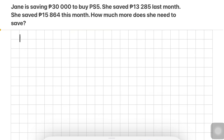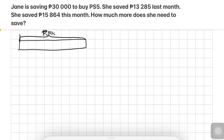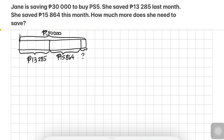Let's try to do the model first. The total money that Jane needs to save is 30,000 pesos. She already has 13,285 pesos from last month and 15,864 pesos this month. We're looking for how much she still needs to save. I'll be showing you different ways to solve this.